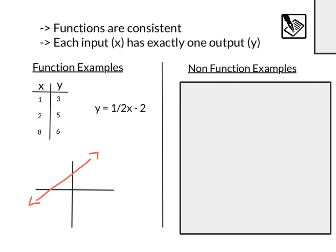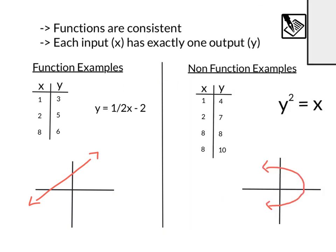Let's look at some non-examples. Maybe that'll help us get a better understanding of what a function does not look like. Here we have a table: one-four, two-seven. Check this out: eight-eight and eight-ten. So this x value of eight has different y values, not a function.